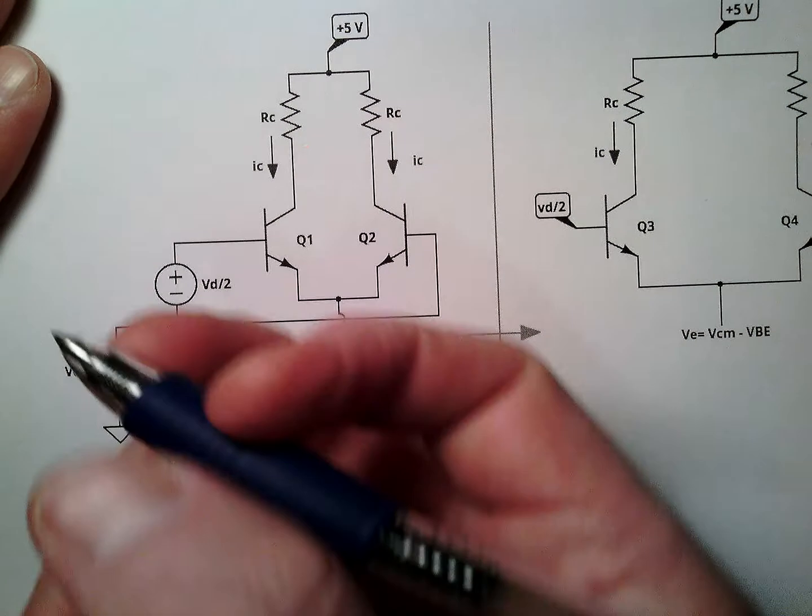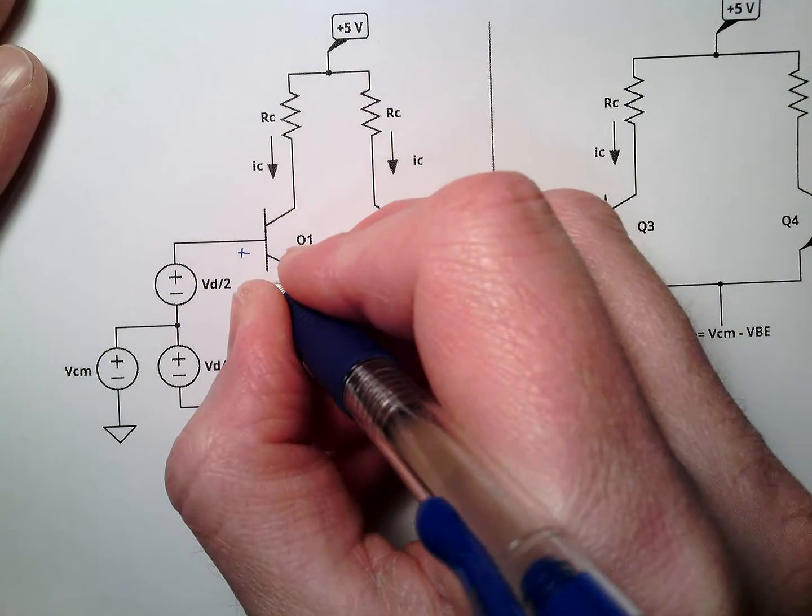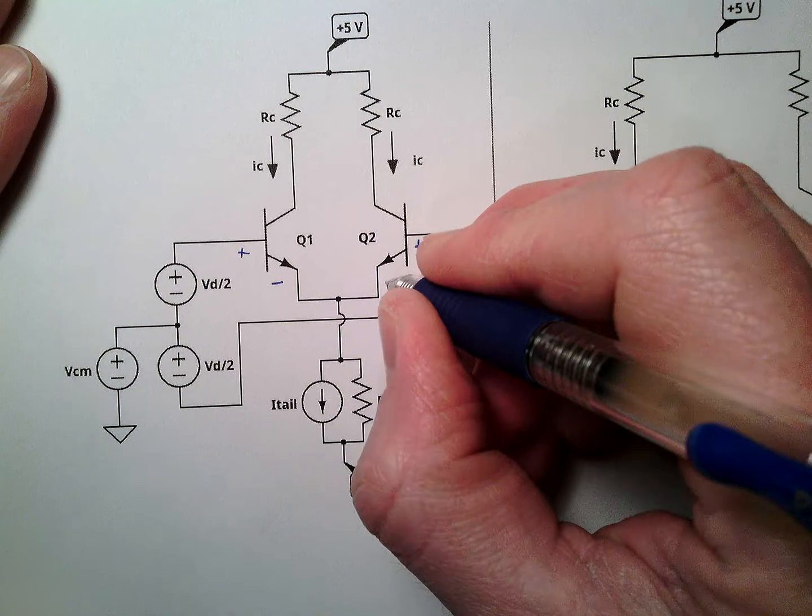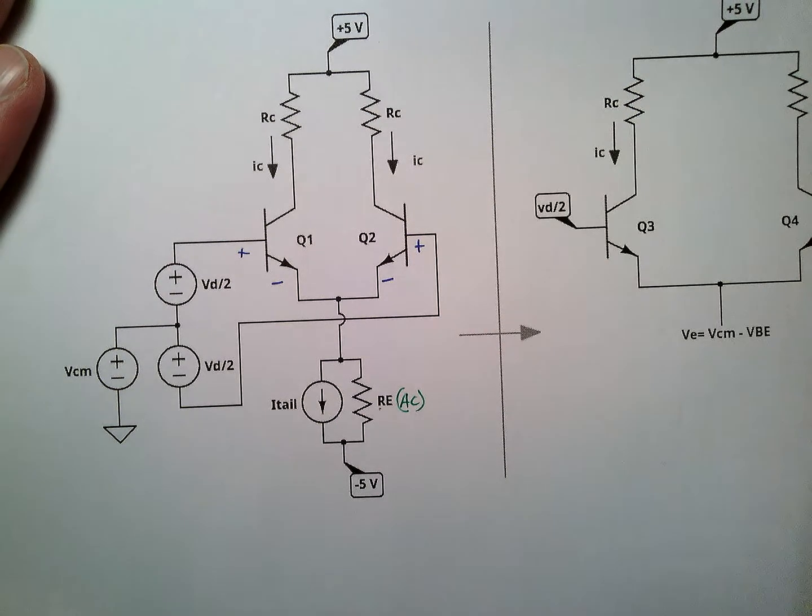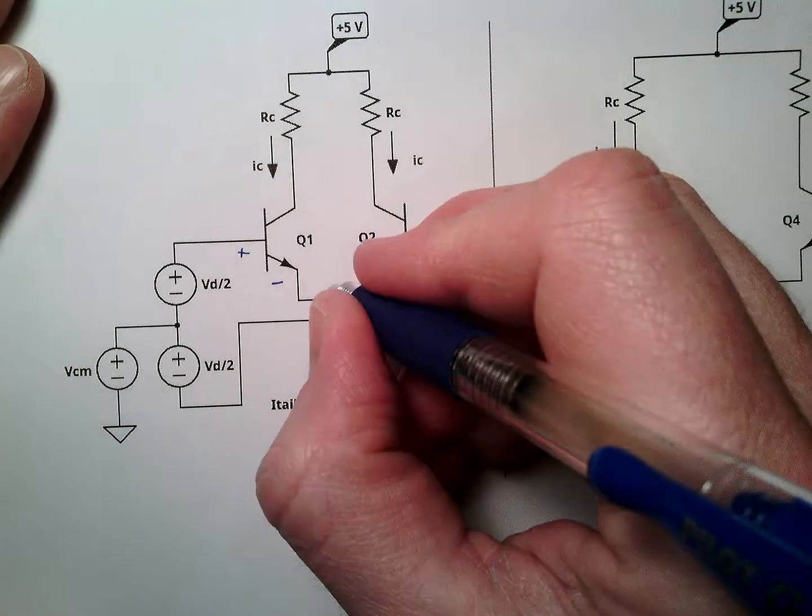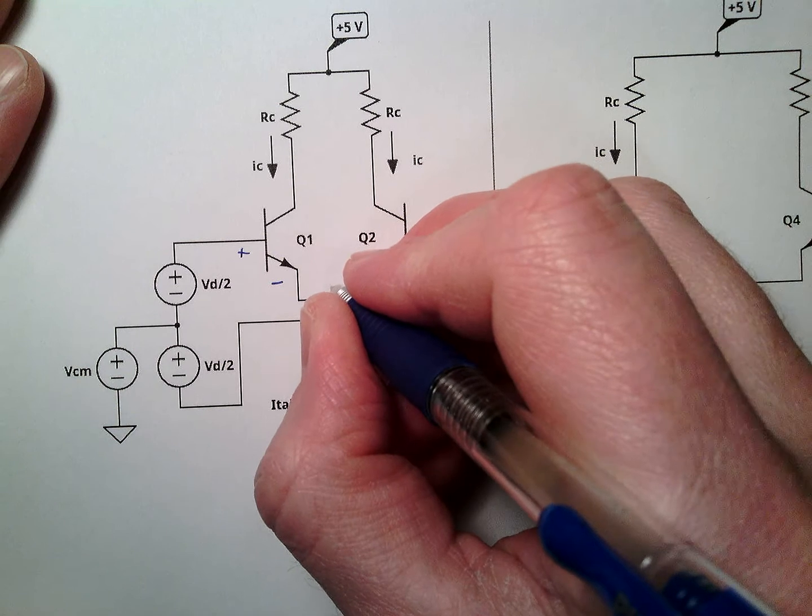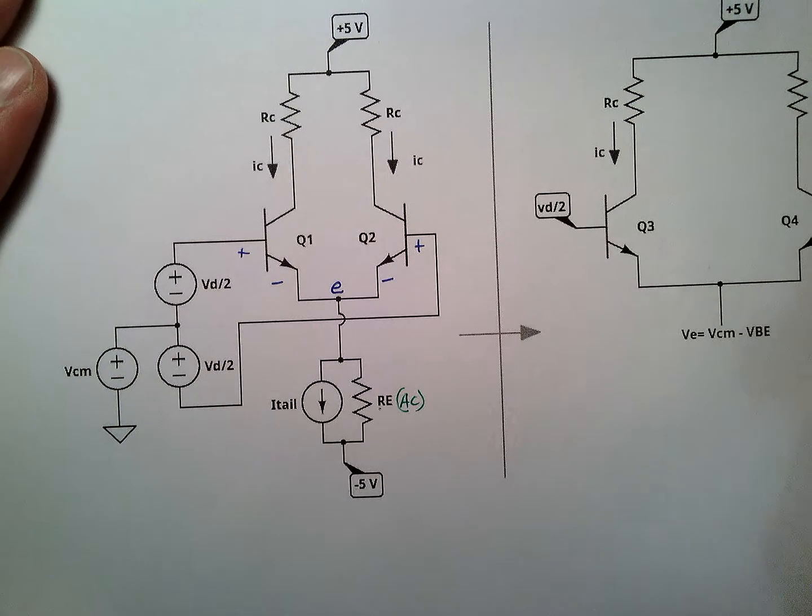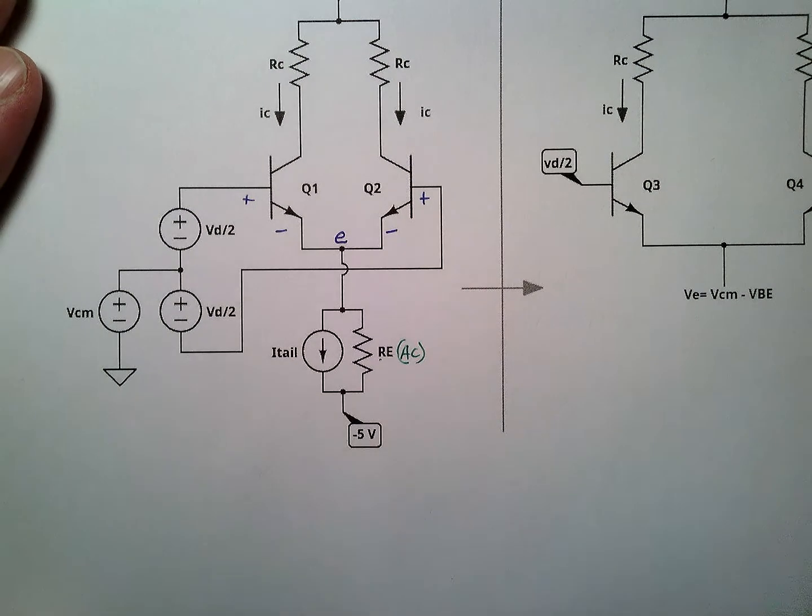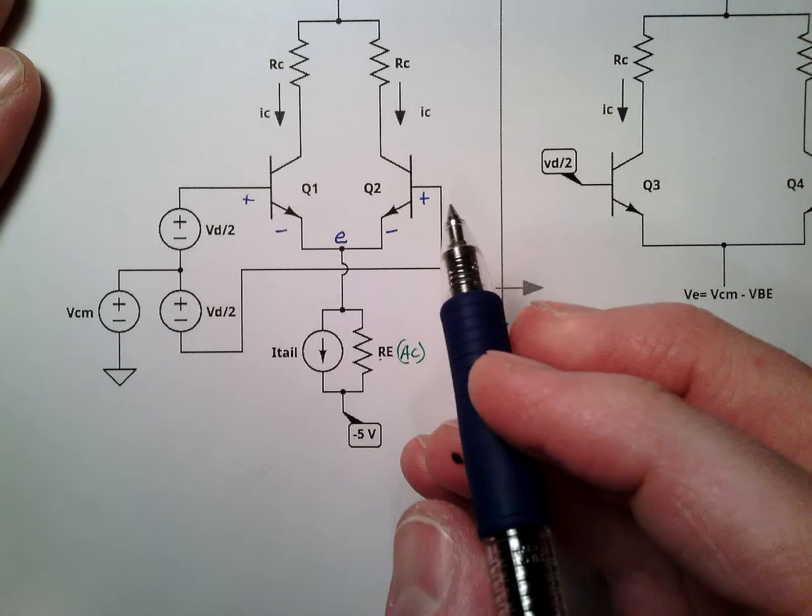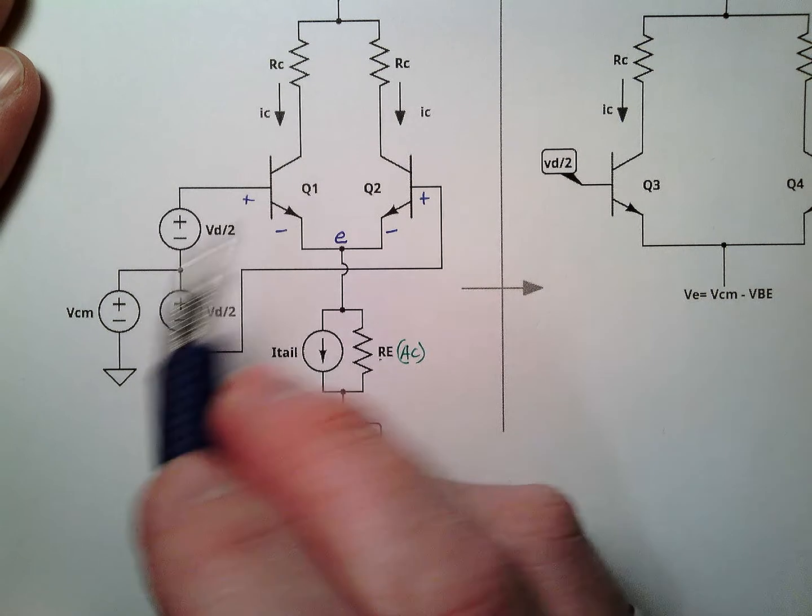We're going to start doing this by looking at, do a KVL loop here, and I'm going to call this node E because it's the emitters of both circuits, or both transistors.